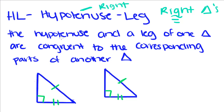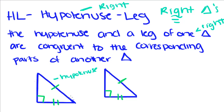The hypotenuse and the leg of one triangle are congruent to the corresponding parts of another triangle. This applies to right triangles because the hypotenuse is the side opposite the right angle, and only right triangles have right angles.